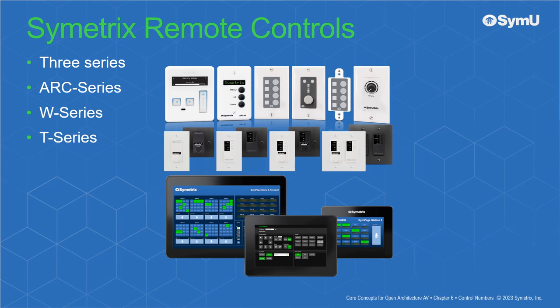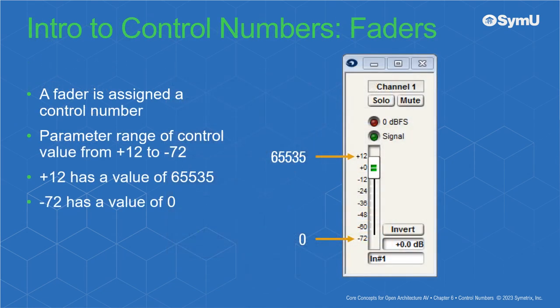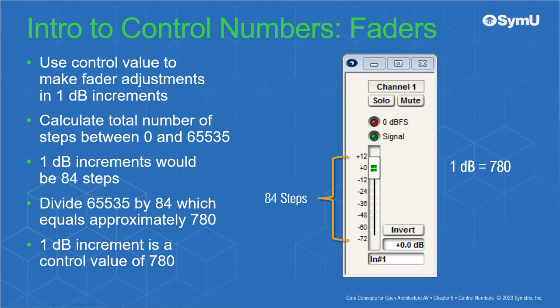In this example, a fader is assigned a control number and has a range of control values from plus 12 to minus 72. Plus 12 has a value of 65535 and minus 72 has a value of 0. To make fader adjustments in 1 dB increments, first calculate the total number of steps between 0 and 65535. At 1 dB increments, there are 84 steps. Divide 65535 by 84, which equals approximately 780. Therefore, a 1 dB increment is a control value of 780.